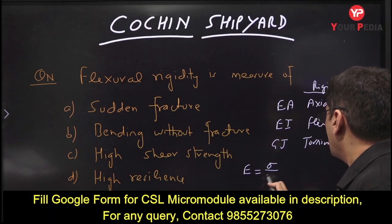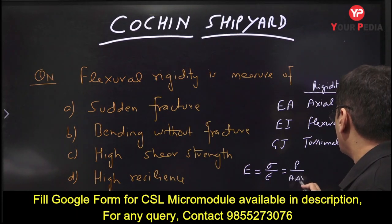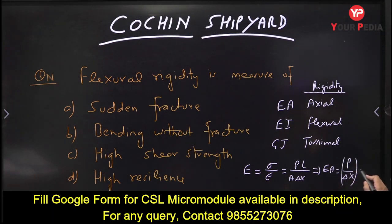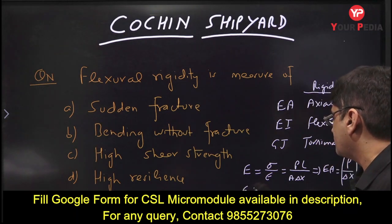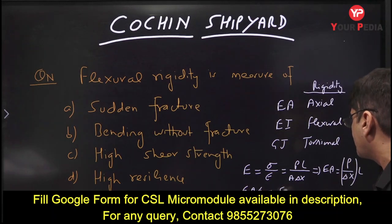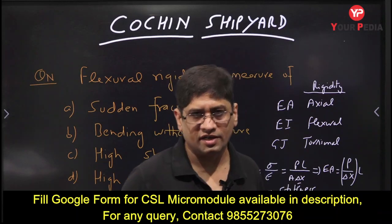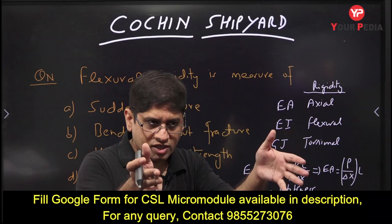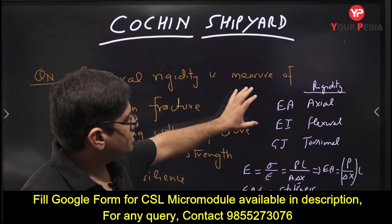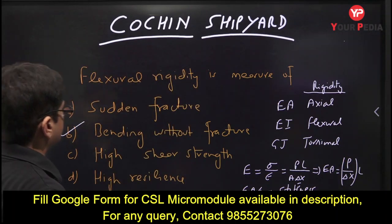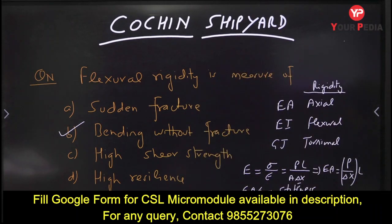Modulus of elasticity is stress over strain — stress is load per unit area, strain is deformation per unit length. EA is load per unit deformation times length. If you divide EA by L, you get stiffness, which is load per unit deformation. So elasticity, stiffness, and rigidity are different things. E is a material property; EA is axial rigidity; EI is flexural rigidity. The answer to this question is: flexural rigidity is a measure of resistance to bending without fracture.